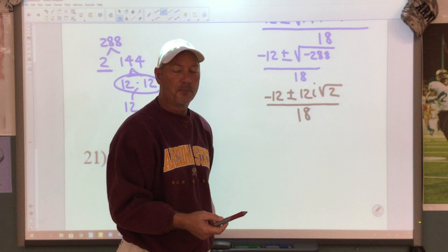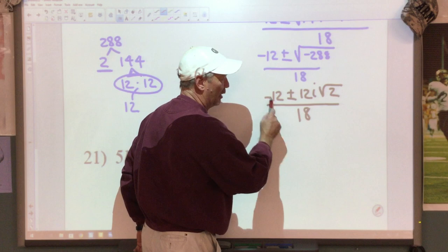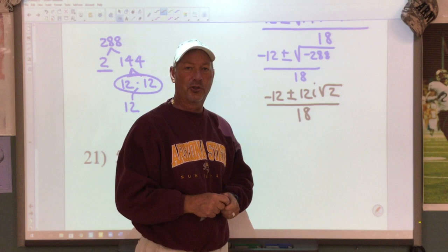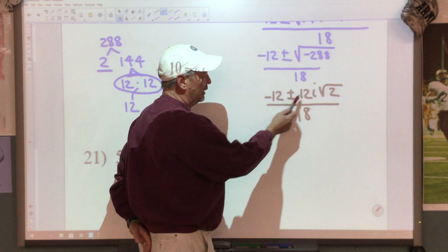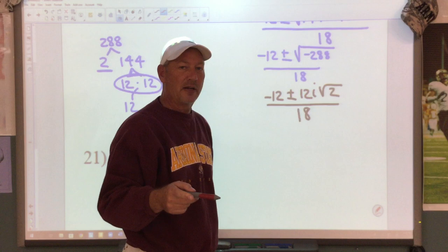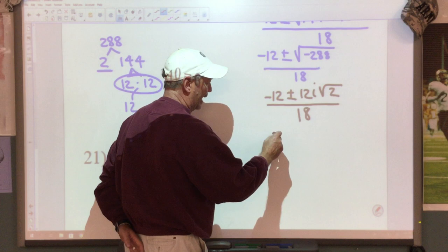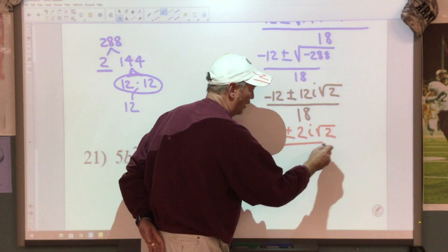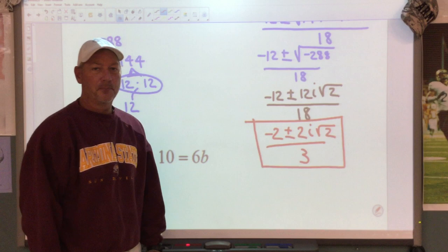We're going to reduce everybody by dividing by 6. So dividing, we get negative 2 plus or minus — divide by 6, you get 2i square root of 2 — and 18 divided by 6 is 3. That would be your final answer: negative 2 plus or minus 2i square root of 2, over 3. Reducing takes practice, so make sure you work on it.